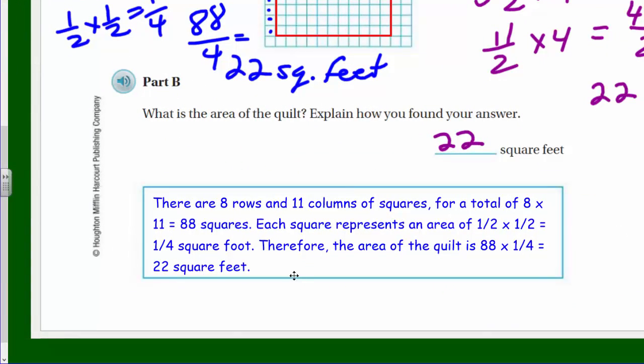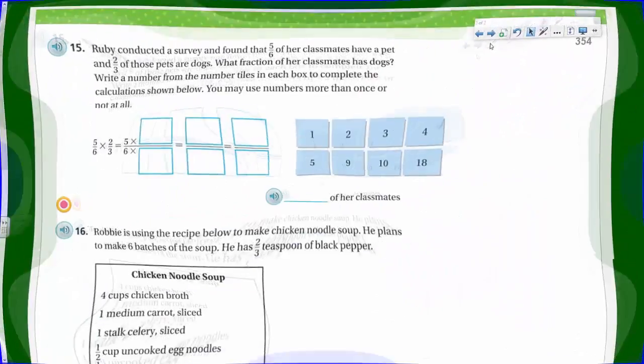What we just talked about, about there being 8 rows and 11 columns of squares, we had a total. Let's go on to the next page.